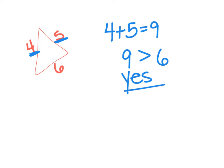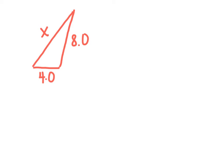We're going to use what we learned about the sides of triangles to help us figure out some missing sides in a triangle — what they could be. Knowing that about triangles, we are going to try to figure out what number X could be if I already know two sides of a triangle. I know one side is four and one side is eight, and I want to know what numbers could all work for X.